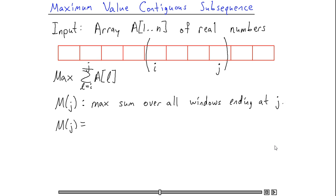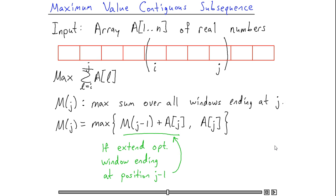I can then write the following recursive formula for M(j). To find the optimal window ending at position j, I either need to extend the optimal window ending at position j minus 1, or I won't extend anything and I'll just start a brand new window consisting of just the element A[j].